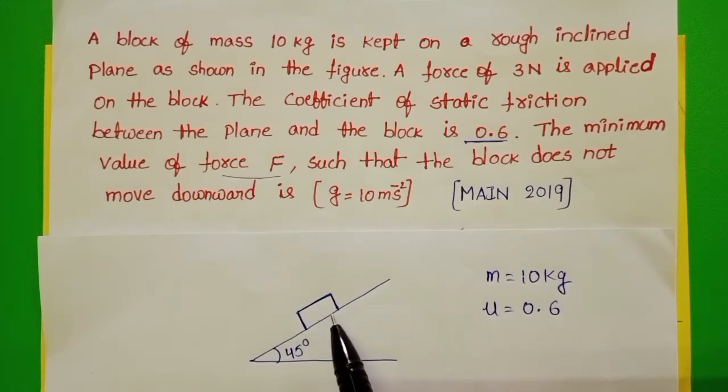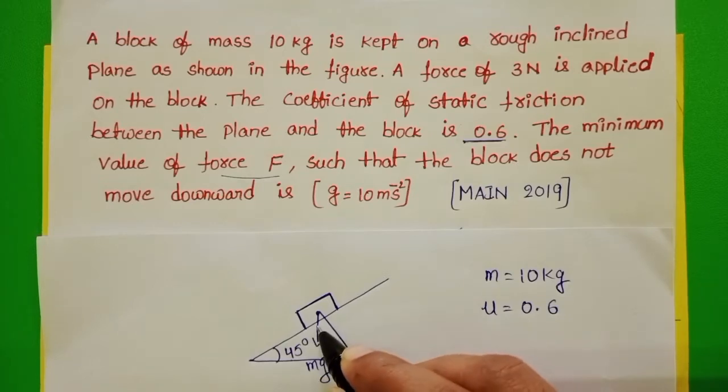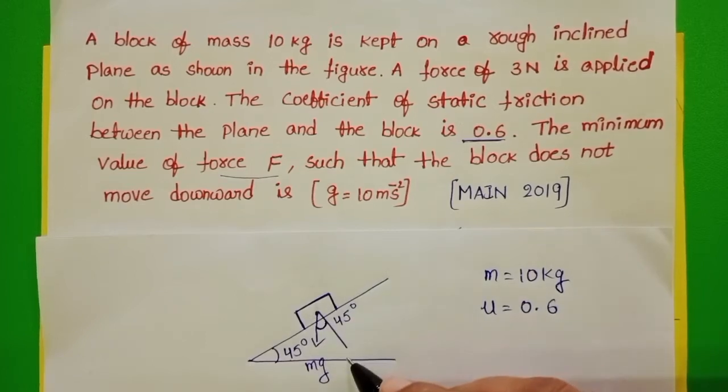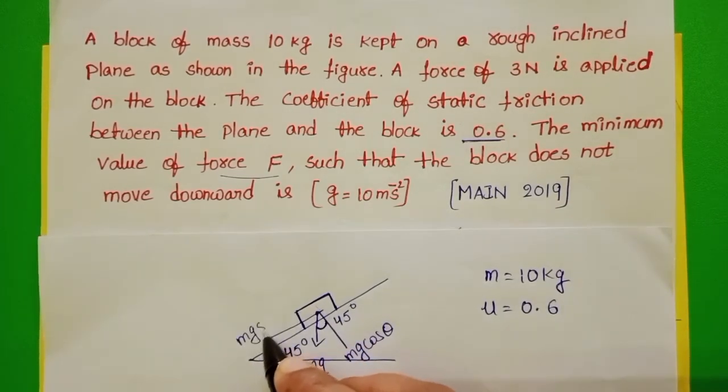When a block is placed on an inclined plane, weight of this block is resolved into two rectangular components. Here angle is theta, then here also angle same 45 degrees. Along this direction component is Mg cos theta, and along the inclined plane in downward direction Mg sin theta.